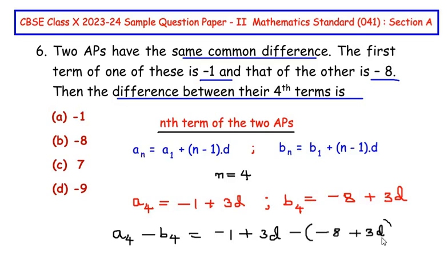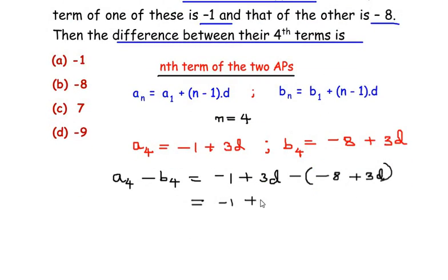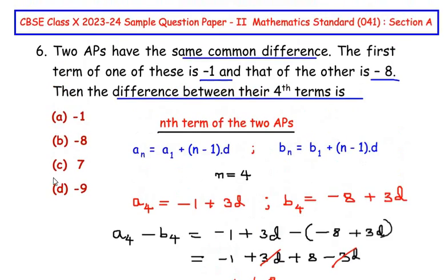Now let us simplify this. It's going to be negative 1 plus 3d, and expanding the brackets we have negative of negative 8 as positive 8 and negative of positive 3d is negative 3d. So here we can see that positive 3d and negative 3d adds up to 0, so we are left with negative 1 plus 8 which is nothing but 7. So the difference between the fourth terms of the two APs is positive 7, so here it is option C.